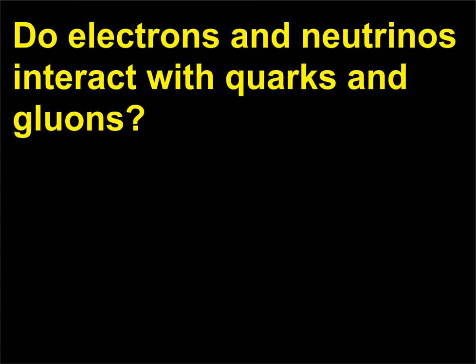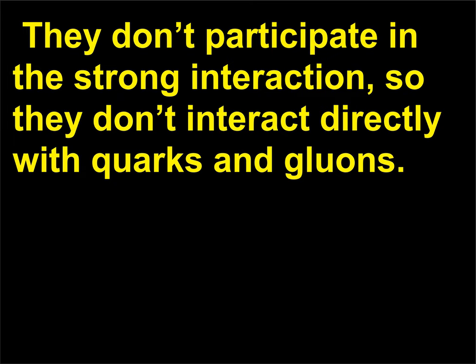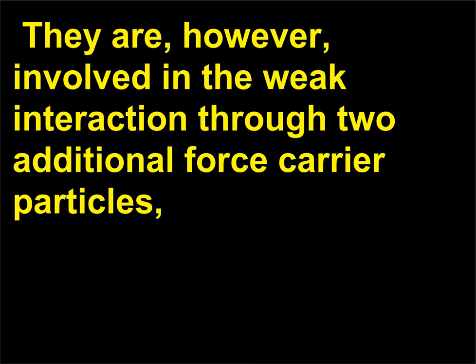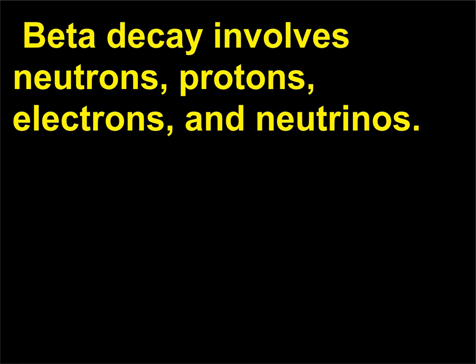Do electrons and neutrinos interact with quarks and gluons? Electrons and neutrinos are called leptons, meaning a lightweight particle. They don't participate in the strong interaction, so they don't interact directly with quarks and gluons. They are, however, involved in the weak interaction through two additional force carrier particles, the W and Z bosons that can interact with quarks. Beta decay involves neutrons, protons, electrons, and neutrinos.